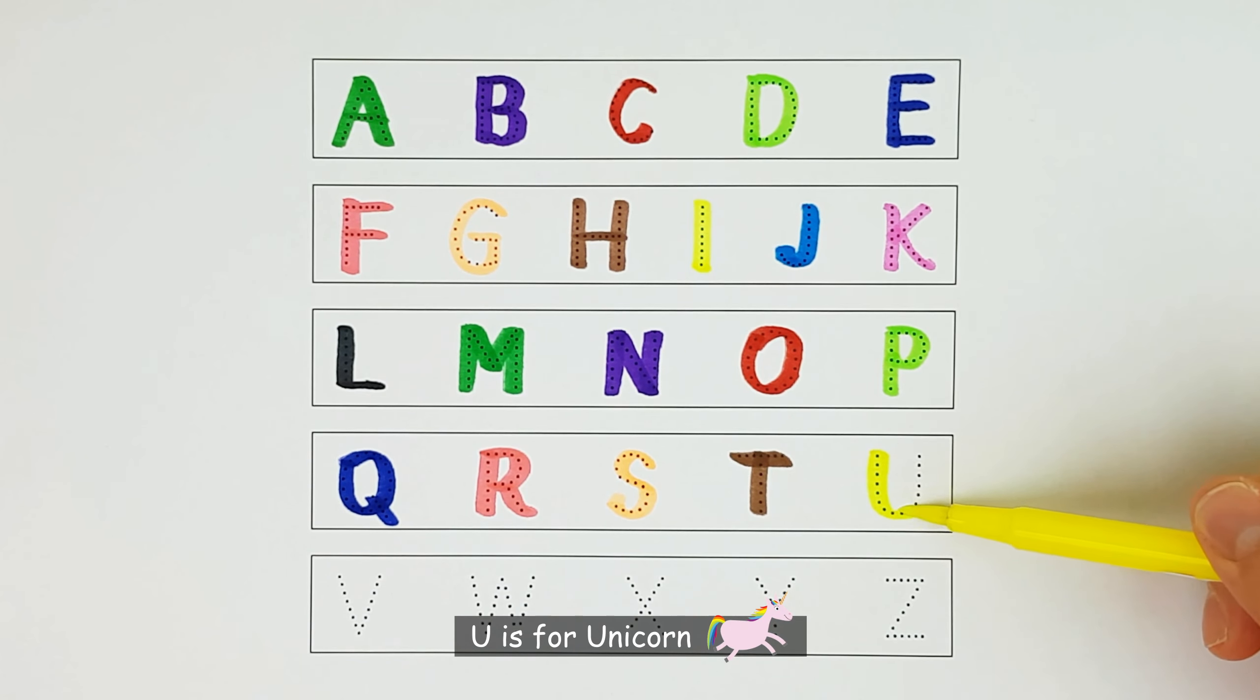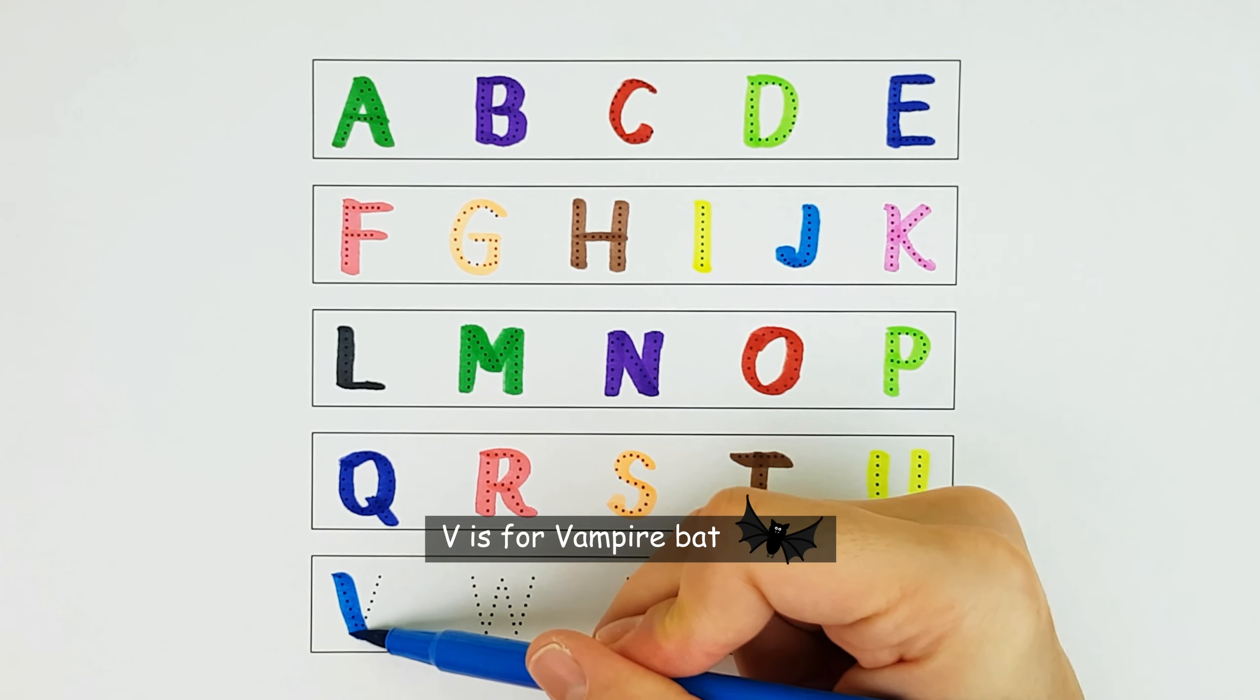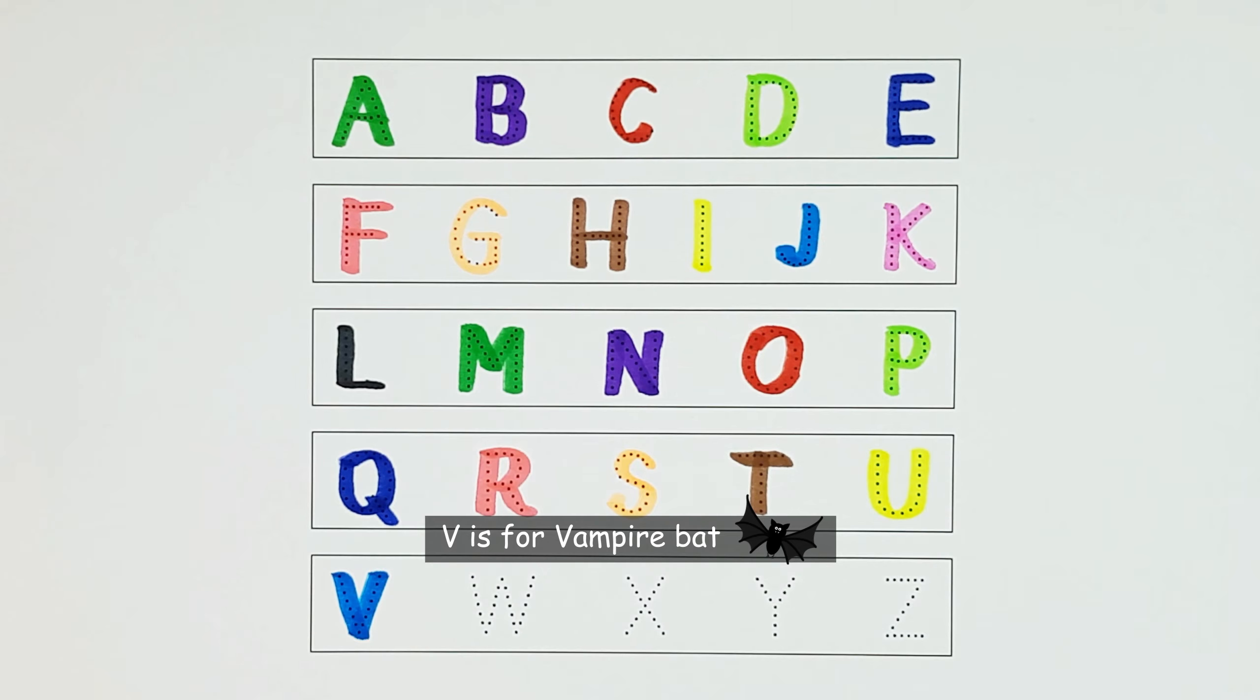U. U is for Unicorn. U. V. V is for Vampire Bat. V.